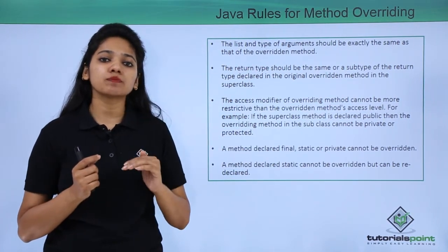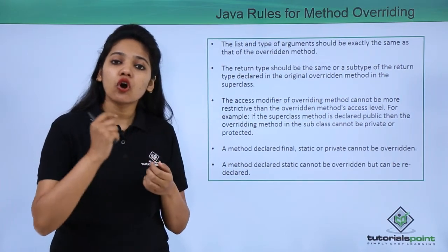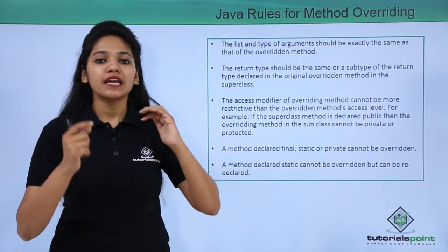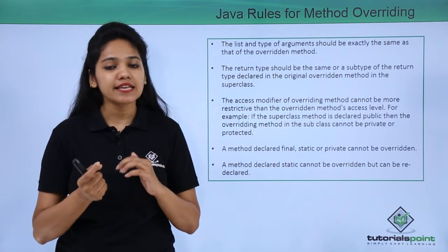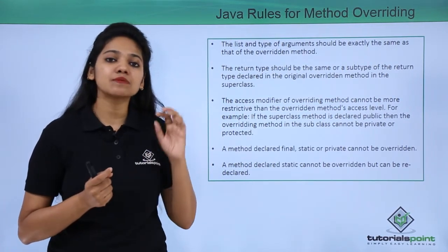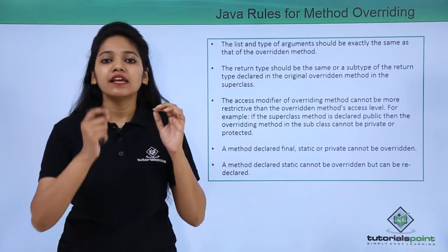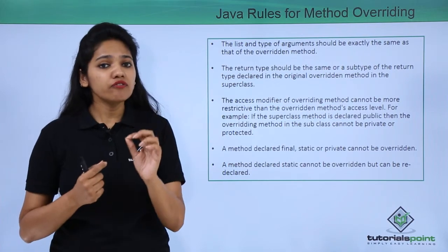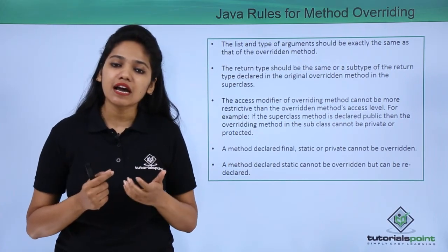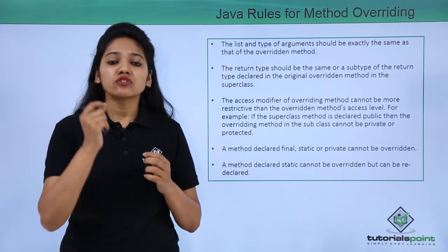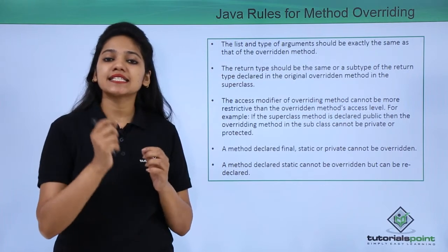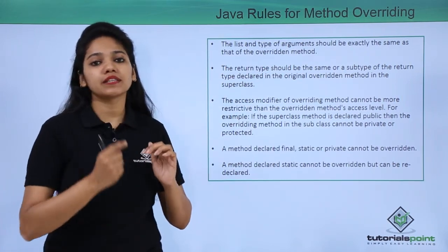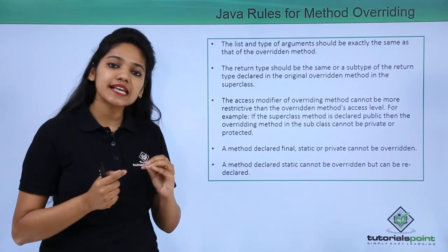The access modifier specified at the subclass or child level should not be more restrictive than what was declared in your parent class. For example, if you declared public, it can be either public or protected but nothing else. Also, if a method is defined as private, static, or final in the parent class, those methods cannot be overridden in the child class. If you define any abstract methods in a class, that class becomes abstract, and any class extending an abstract class or implementing an interface must define all those methods — unless that class itself is abstract.